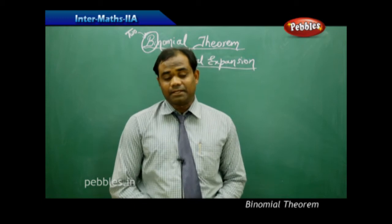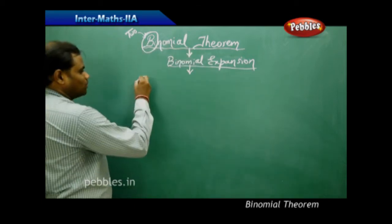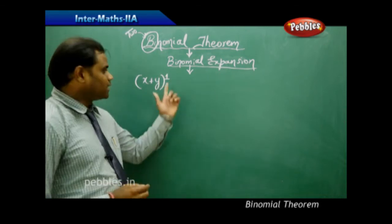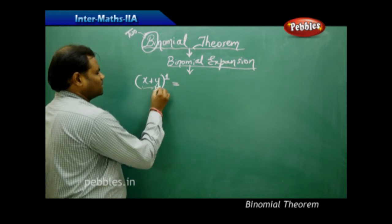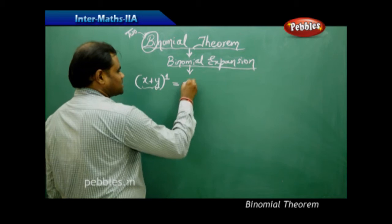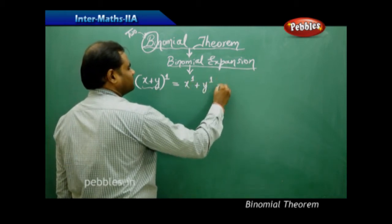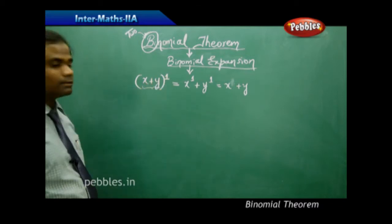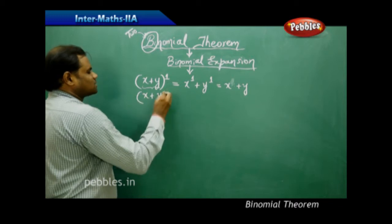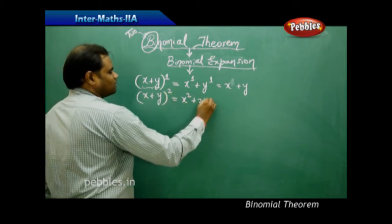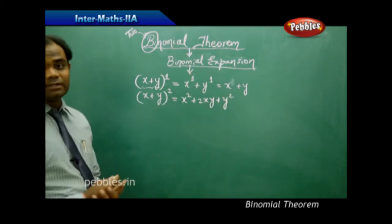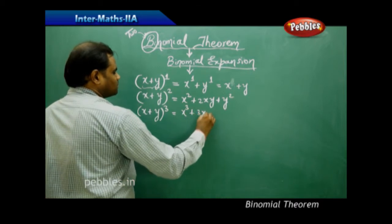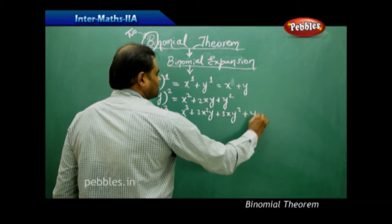Now let's study what exactly the binomial expansion is. I take a binomial x + y and raise it to power 1, giving x + y. When raised to power 2, I get a² + 2ab + b², which we have already seen. When raised to power 3, I get a³ + 3a²b + 3ab² + b³.